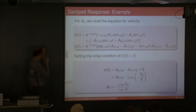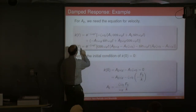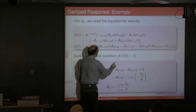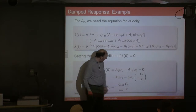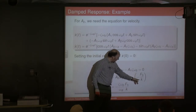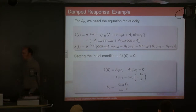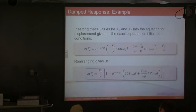Setting t equal to zero, the exponential term becomes one and the sine term drops to zero. We end up with zero on the left, and working through, A2 − A1 times this combination equals zero. We know A1 = −F₀/k, so we can substitute and find A2 = (ζω₀/ωd) × (F₀/k).